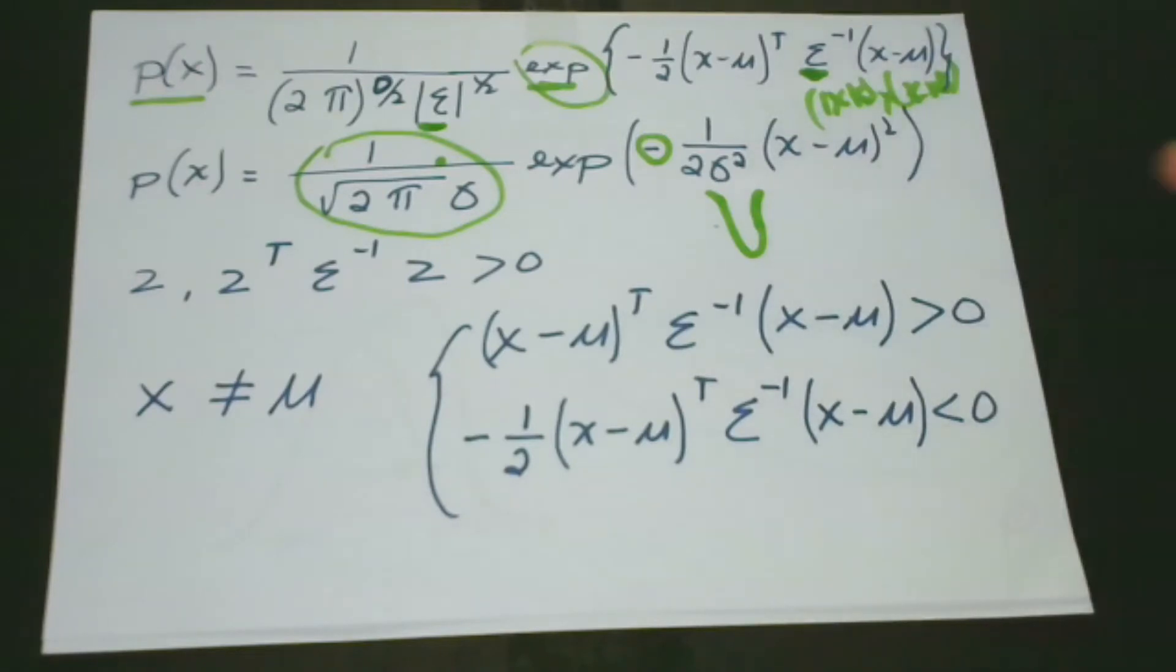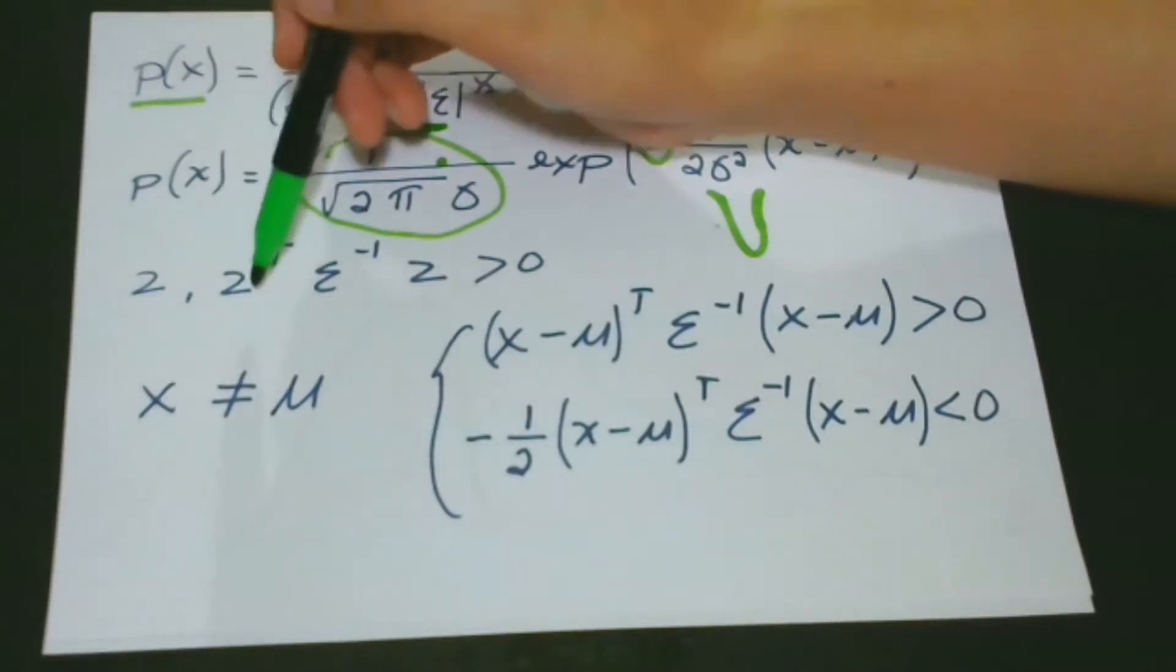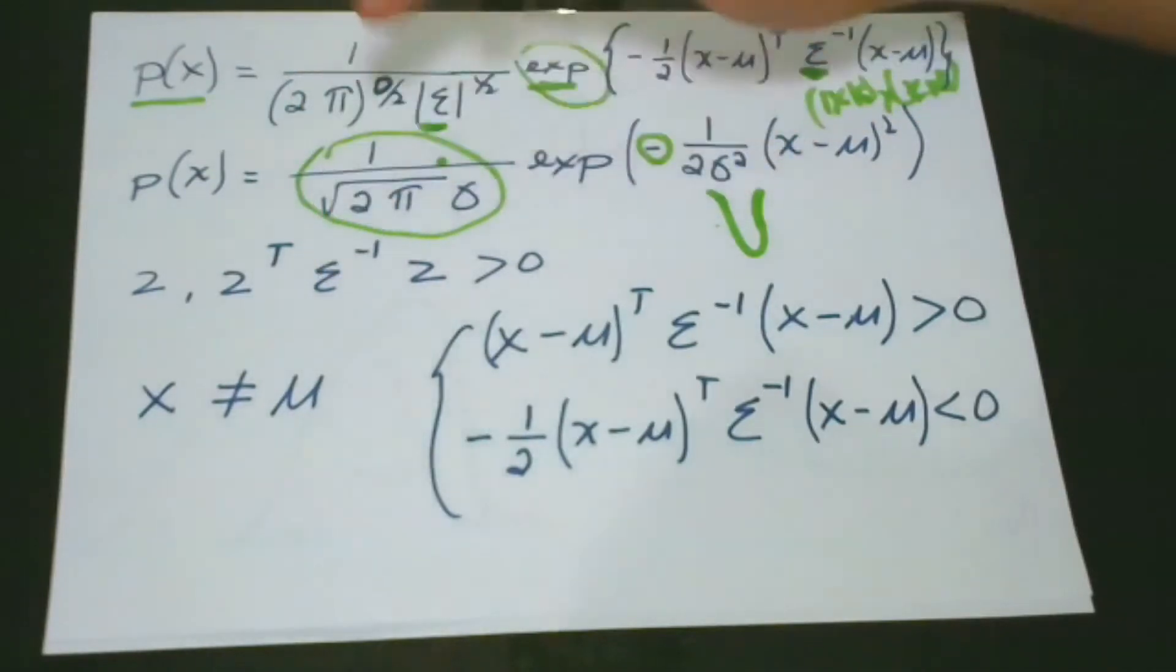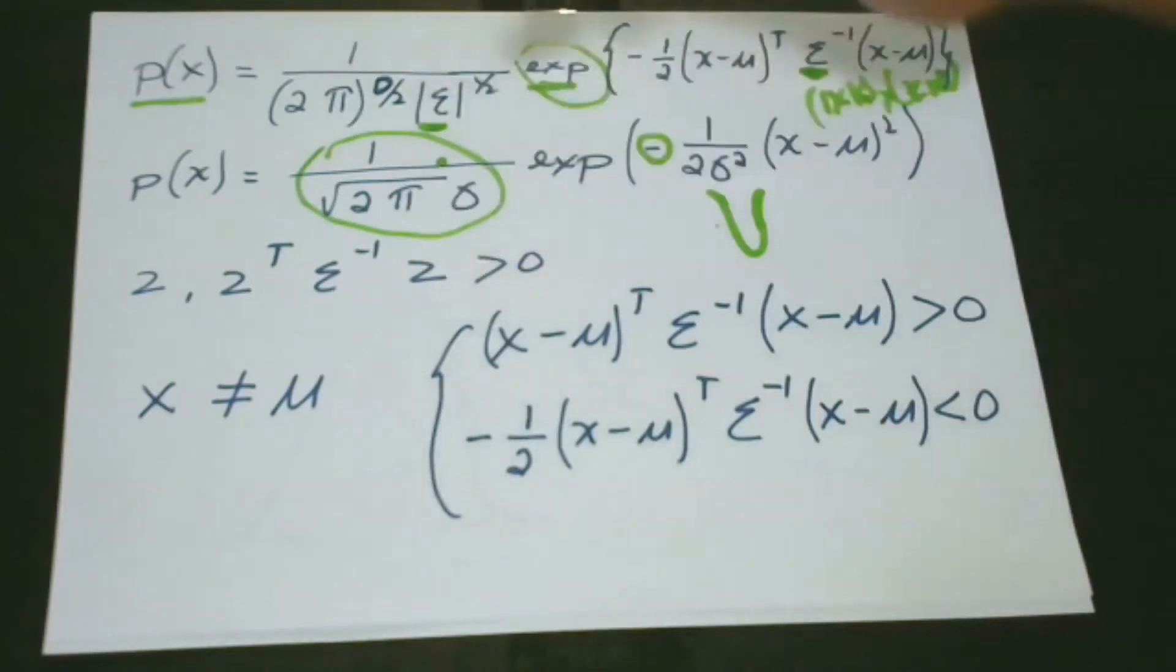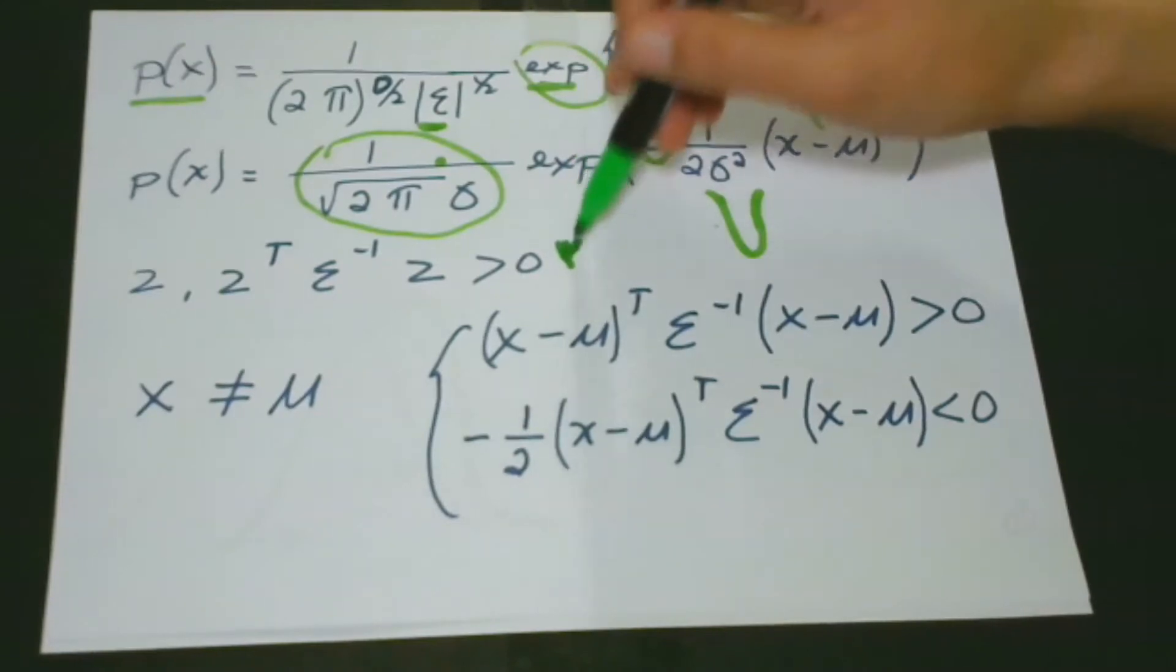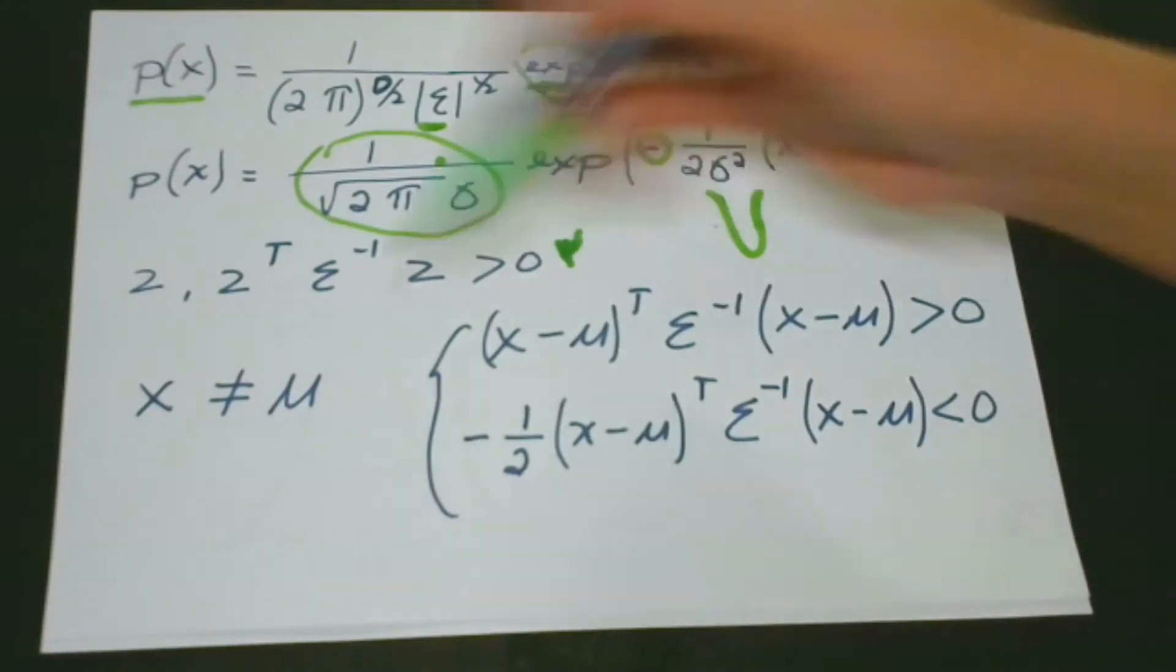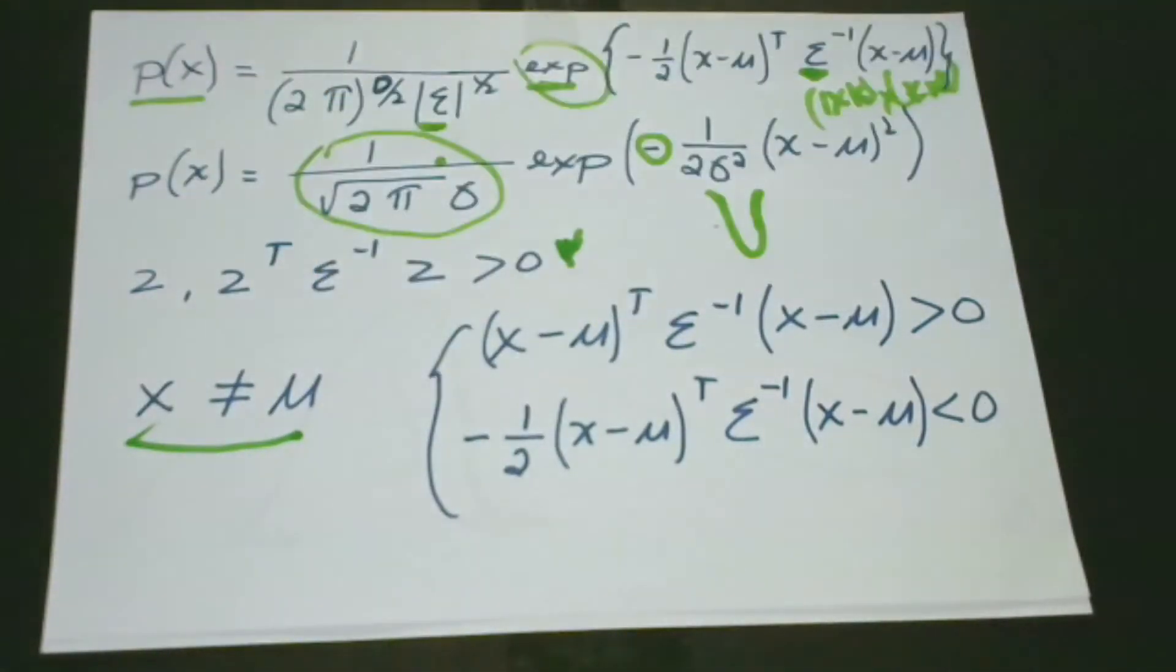then we can say that for any non-zero vector, that is vector z, which is transpose z, covariance, the inverse of the covariance matrix, then z is greater than 0. So this tells us,